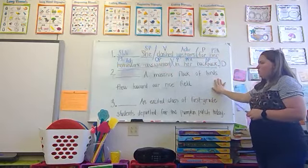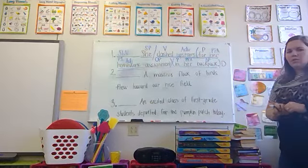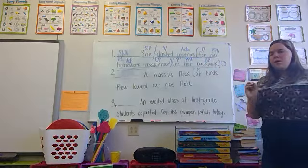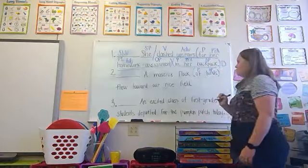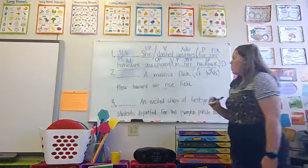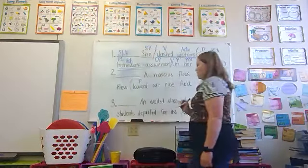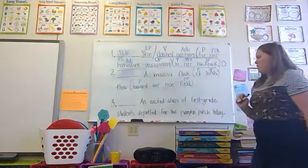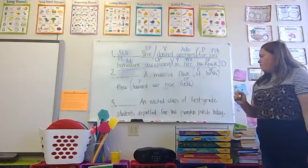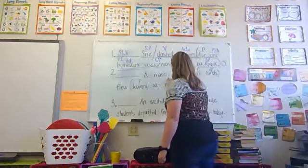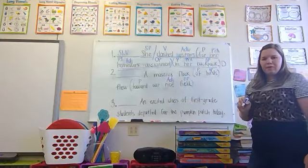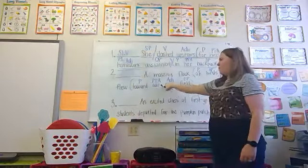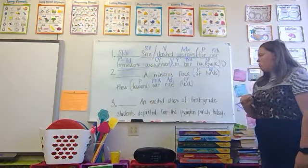Sentence number two: a massive flock of birds flew toward our rice field. Let's look for prepositions first. 'Of' is a preposition — of what? Birds — object of the preposition. 'Toward' is also a preposition — toward what? Field — object of the preposition. What kind of field? Rice — adjective. Whose rice field? Our — possessive pronoun adjective. The rice field belongs to us; it shows ownership.